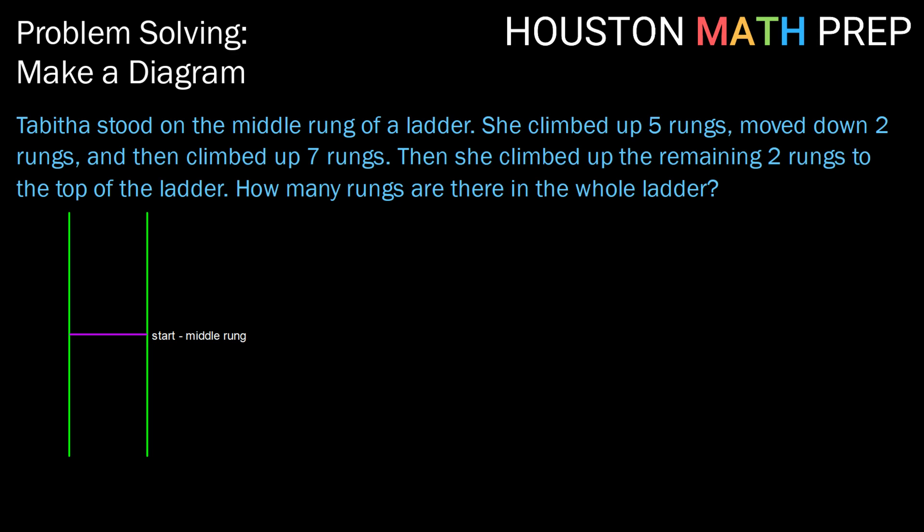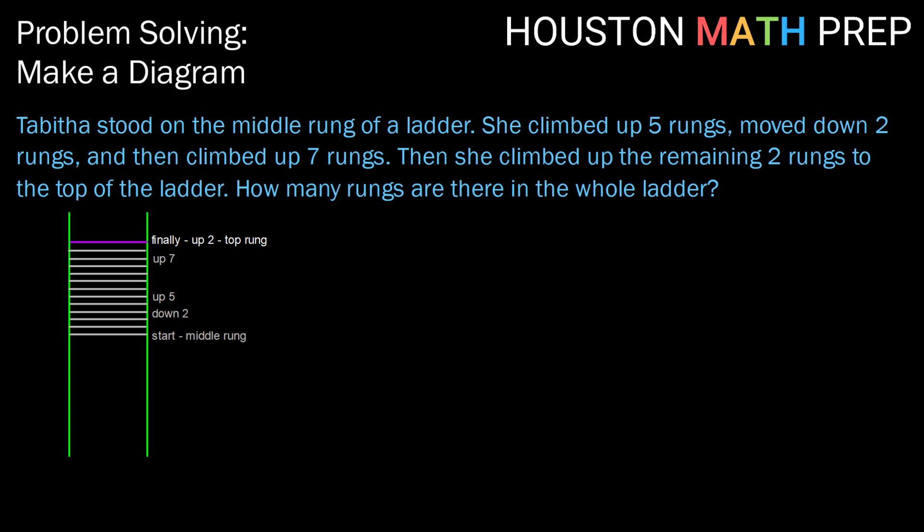So here we have our diagram. We've got a rung at start right in the middle. The first thing Tabitha does is she climbs up five, so from the middle we've now got Tabitha up five. After that, it says she moved down two rungs, so her next movement brought her down two. From there, Tabitha climbed up seven rungs. Then she climbed up two more rungs to reach the very top of the ladder. So we have our completed diagram here.